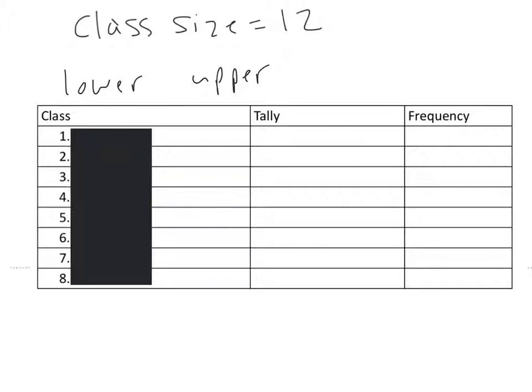All that means is the lowest number in each class and the highest number in each class. So the first thing that we start with is the lowest number that was on our chart. And if you remember, the lowest number that we had was 19. So that's going to be the first lower limit of our class. We know the lowest number in class 1 will be 19.